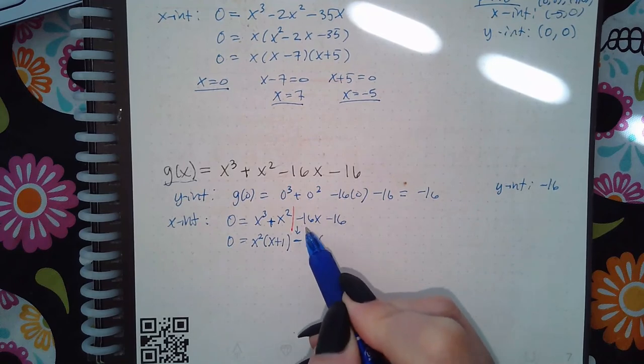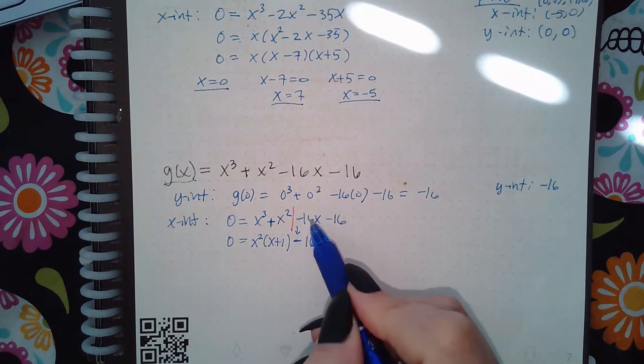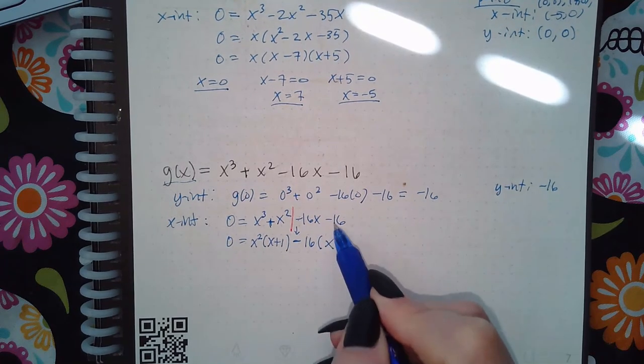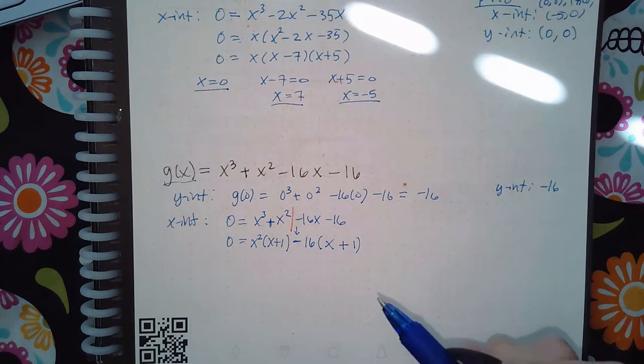So if I take out a negative 16, because that's what's outside the parentheses, I have an x, and a negative 16 divided by a negative 16 is a positive 1. So they have this x plus 1 in common, and then what I have left over is the x squared from out here and the negative 16 from out there.